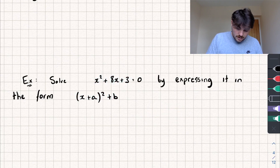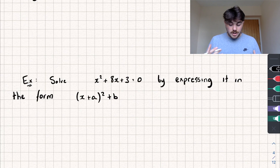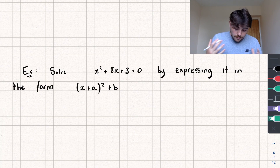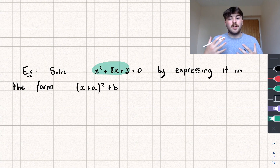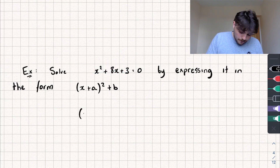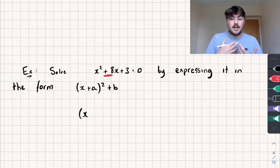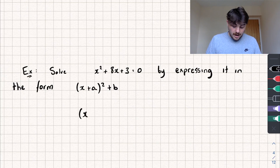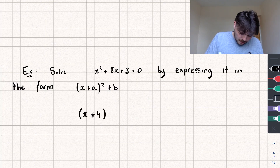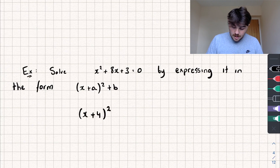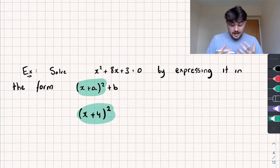When we want to solve a quadratic equation by completing the square, the first step is obviously going to be to complete the square. Look at the coefficient of x squared — if it's equal to 1, exactly like this example, then we write a bracket with an x, then look at the coefficient of x in the quadratic equation. In this case it's positive 8, so we divide that by 2 to get positive 4, and that goes in the bracket next to the x. So we've got x plus 4, all squared.